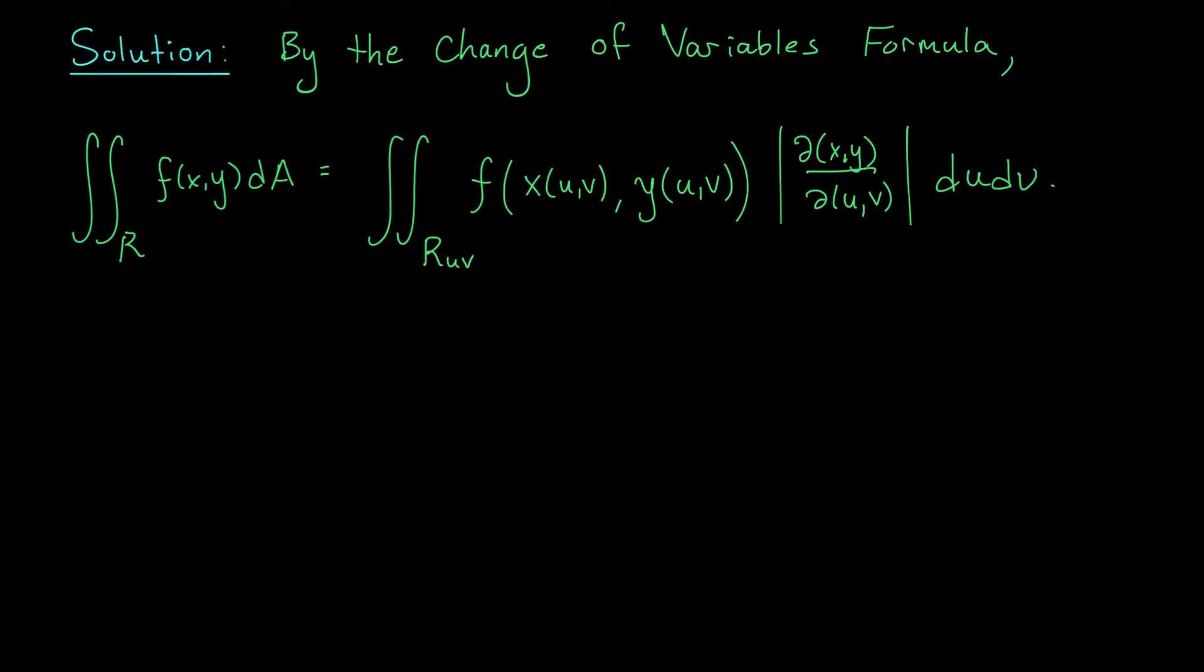To solve this problem we know we're going to have to use our change of variables formula. It says that we can convert our integral over R into an integral in terms of u and v. We're now integrating over the transformed region in the uv plane which we'll have to figure out. We're going to replace our x and y using the expressions involving u and v, so in this case 2u + v and u + 2v.